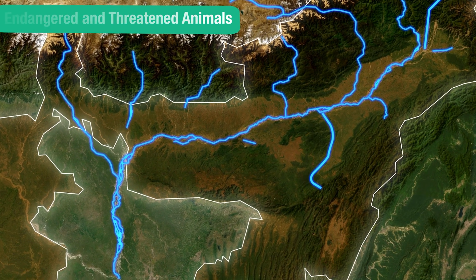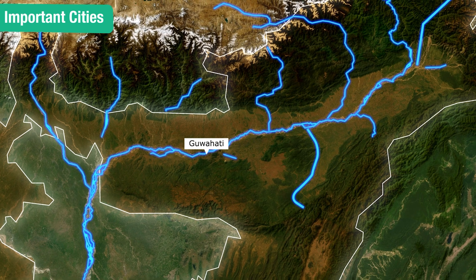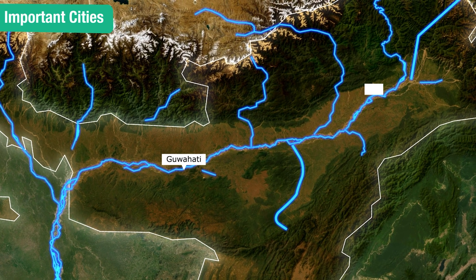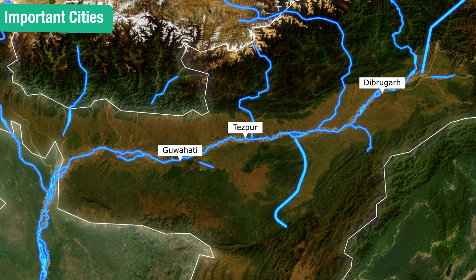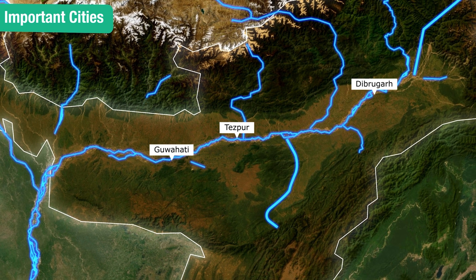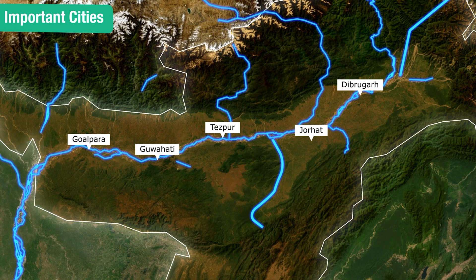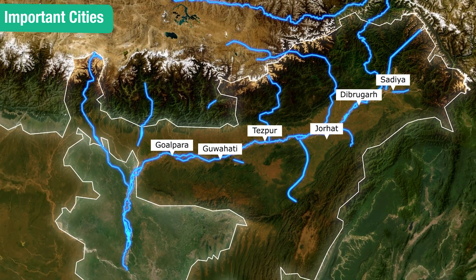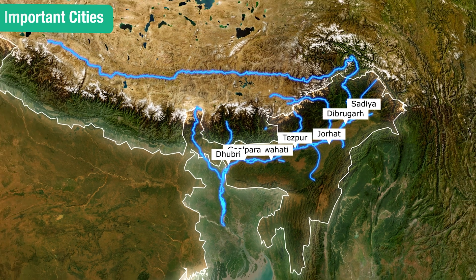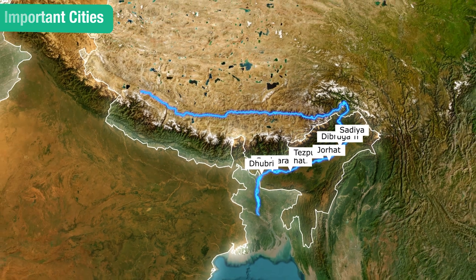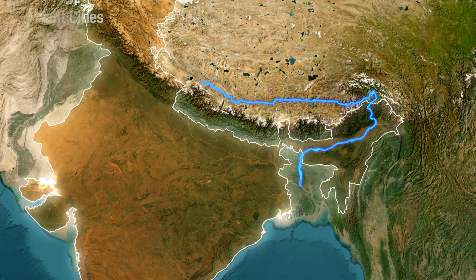Important cities along the Brahmaputra river include Guwahati, the largest city in Assam; Dibrugarh, known for tea estates; Tezpur, known as the cultural capital of Assam; Jorhat, known as the heritage city; Goalpara, known for agriculture; and Sadiya, which is a gateway to Arunachal Pradesh. These are some of the important aspects of the Brahmaputra and its tributaries.